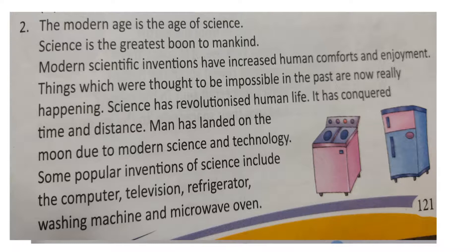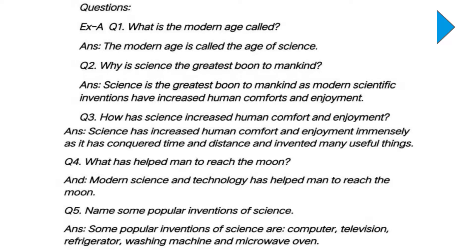Related to this passage, we are having some questions. First question: what is the modern age called? You can find this in the paragraph — the modern age is called the age of science. Second question: why is science the greatest boon to mankind? This also we have seen in the paragraph — science is the greatest boon to mankind as modern scientific inventions have increased human comforts and enjoyment.